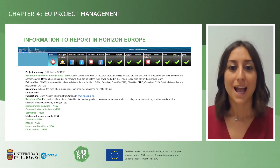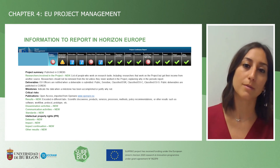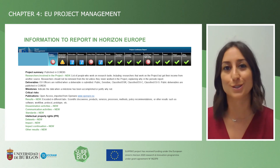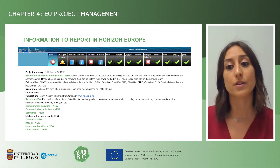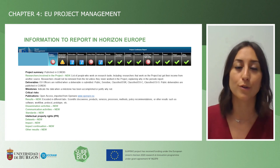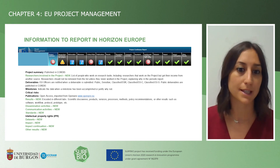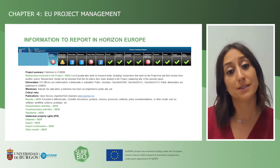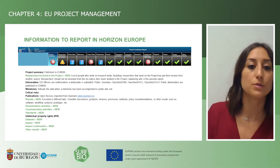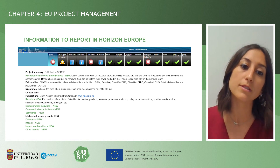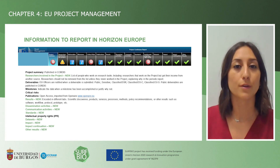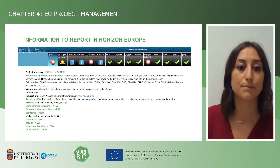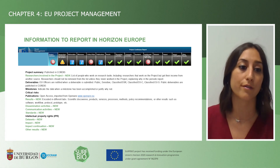The Results section includes different tabs with information about scientific discoveries, products, services, processes, methods, policy recommendations, and other results such as software, workflows, protocols, and prototypes. There is also a tab for dissemination activities, which is different from communication activities covered in a separate tab, as well as tabs for standards, intellectual property rights, datasets, impacts, and other results.